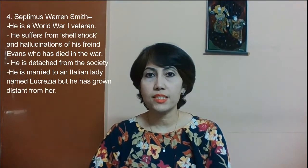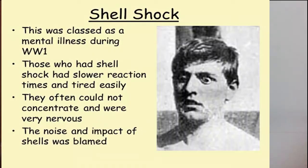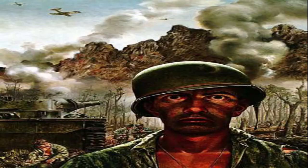The fourth character is Septimus Warren Smith. Septimus is a World War I veteran who is suffering from shell shock and hallucinations of his friend Evans, who died in the war. Shell shock is a kind of post-traumatic stress disorder with which many soldiers were afflicted during the war. The intensity of bombardment and horror caused an acute sense of fear, panic, sleeplessness, and an inability to talk, walk, or reason. A person suffering from shell shock becomes detached from society and has a blank, steady expression.